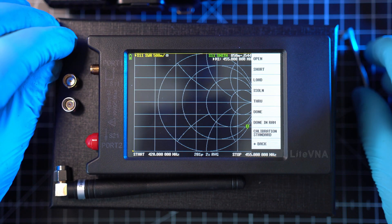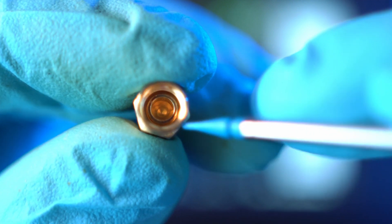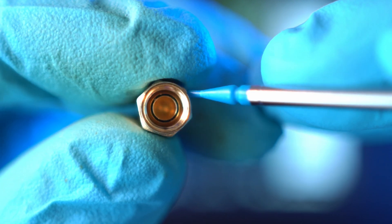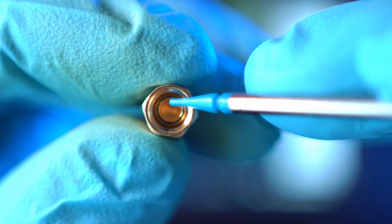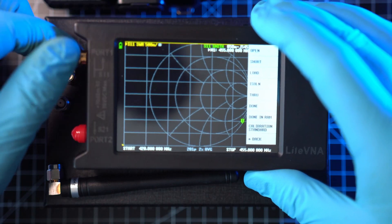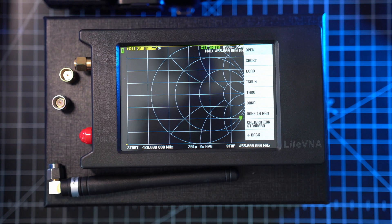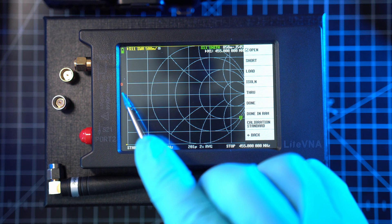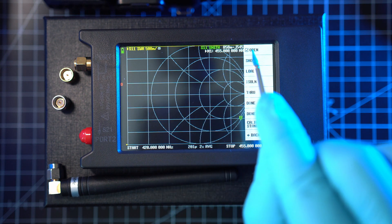Now it's time for the SMA plug that mimics an open circuit. It is this guy. Inside is missing the core pin. So screw it on and hit open. Wait a couple of seconds and the letter O appears here, along with a check mark here.